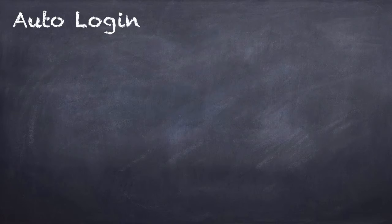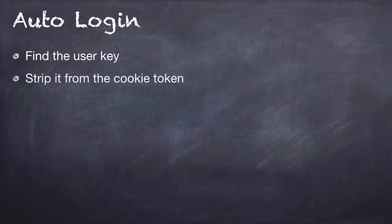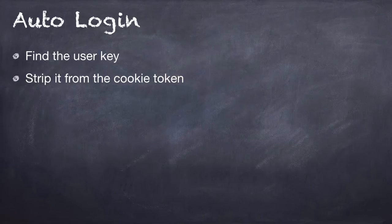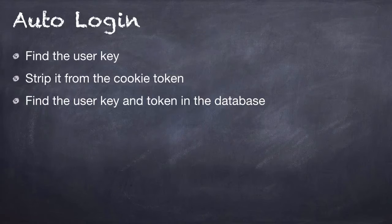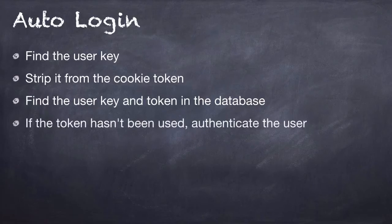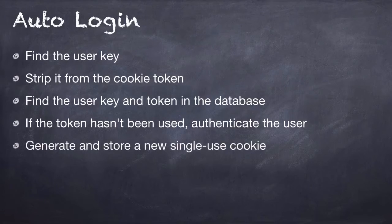To explain how auto-login works, first we need to find the user key. Then we're going to strip it from the cookie token. We're going to find the user key and token in the database. And if the token hasn't been used, we're going to authenticate the user and generate and store a new single-use cookie at the same time.